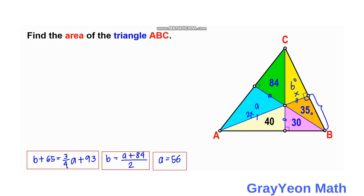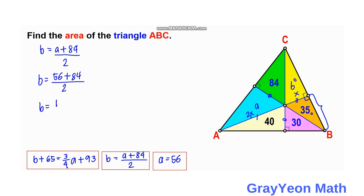Using the second equation, B = (A + 84) / 2 = (56 + 84) / 2. The numerator is 140, and dividing by 2 gives B = 70 square units.